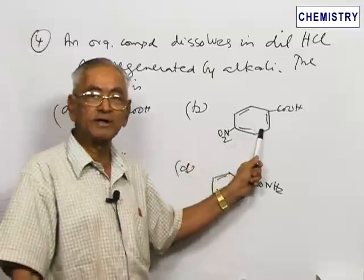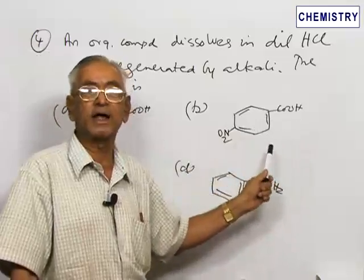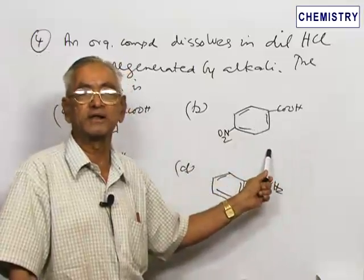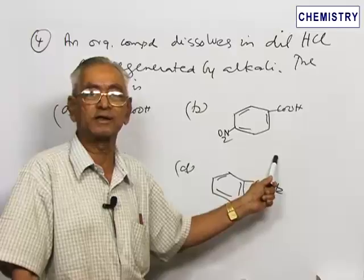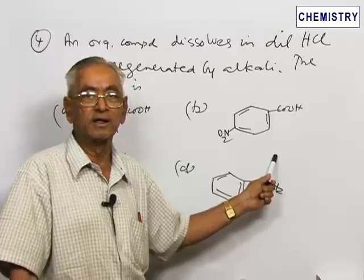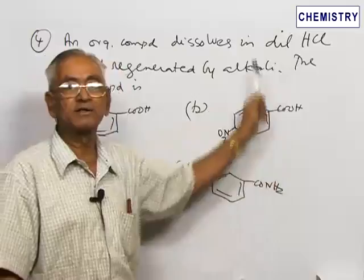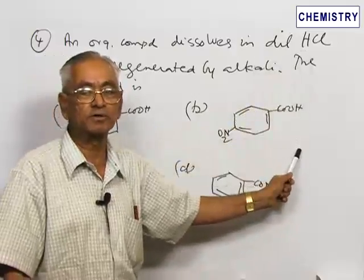B is also an acid with a nitro group substituted. It is the same as benzoic acid, it is an extra nitro group that is part of the ring system, that is paranitrobenzoic acid or 4-nitrobenzoic acid. That will not also dissolve in an acid, will not dissolve in another acid. Therefore, that is also not correct.